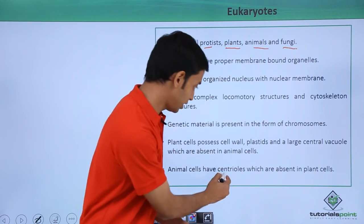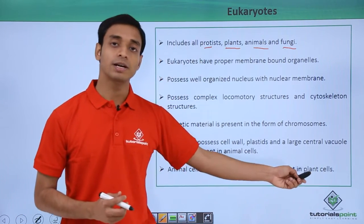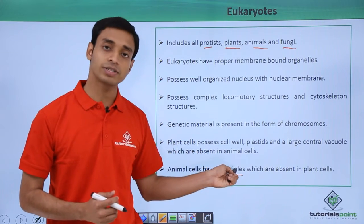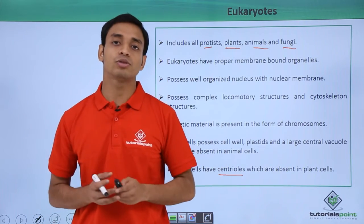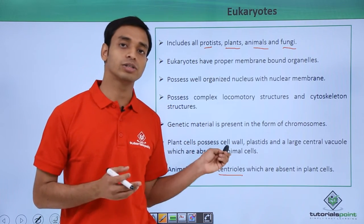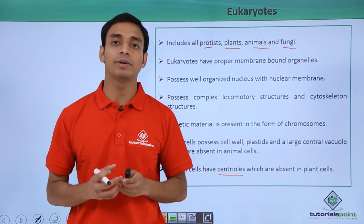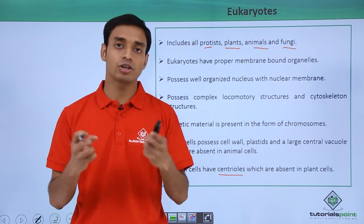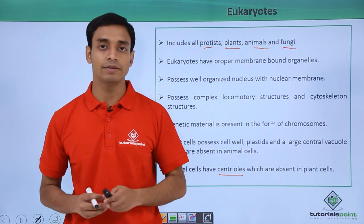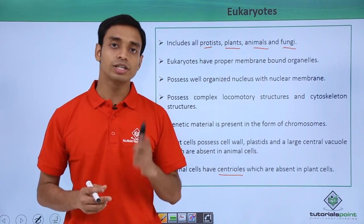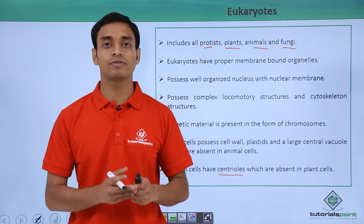Animal cells, on the other hand, have centrioles, which are absent in plant cells. During the cell division process, centrioles give rise to spindle fibers, which help in the separation of chromosomes during cell division.